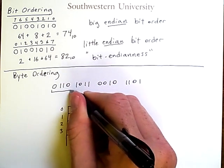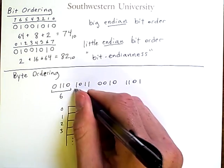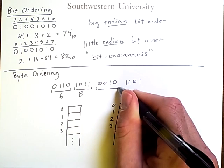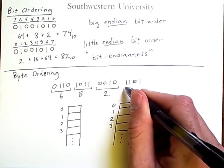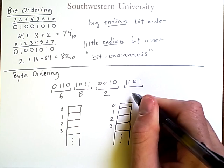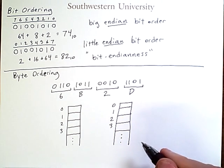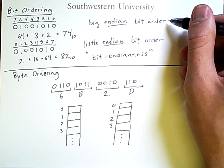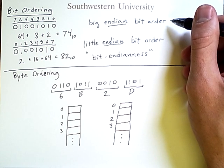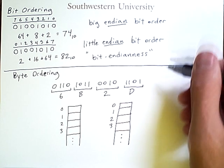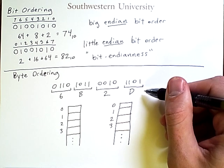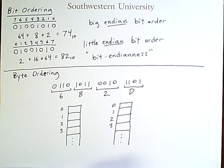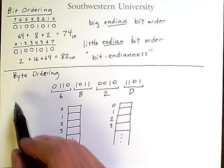So this group of 4 is the hex value 6. This group of 4 is the hex value B. This group of 4 is the hex value 2, and this group of 4 is the hex value D. Now notice that in this example I have implicitly used big endian bit order. If I were using little endian bit order, then the interpretation of these values into hex would be different. But regardless of what bit ordering scheme I'm using, I also have to consider how I order my bytes.